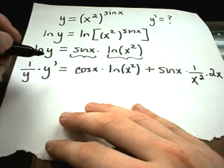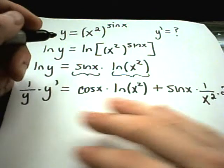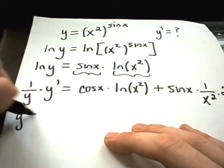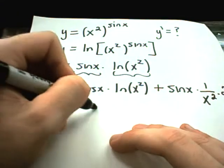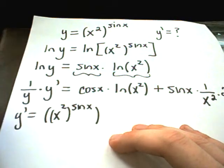And now we're pretty much done in this problem. All we have to do is just multiply through by the y on both sides. We'll get y prime equals y, but again, y is x squared raised to the sine of x power.